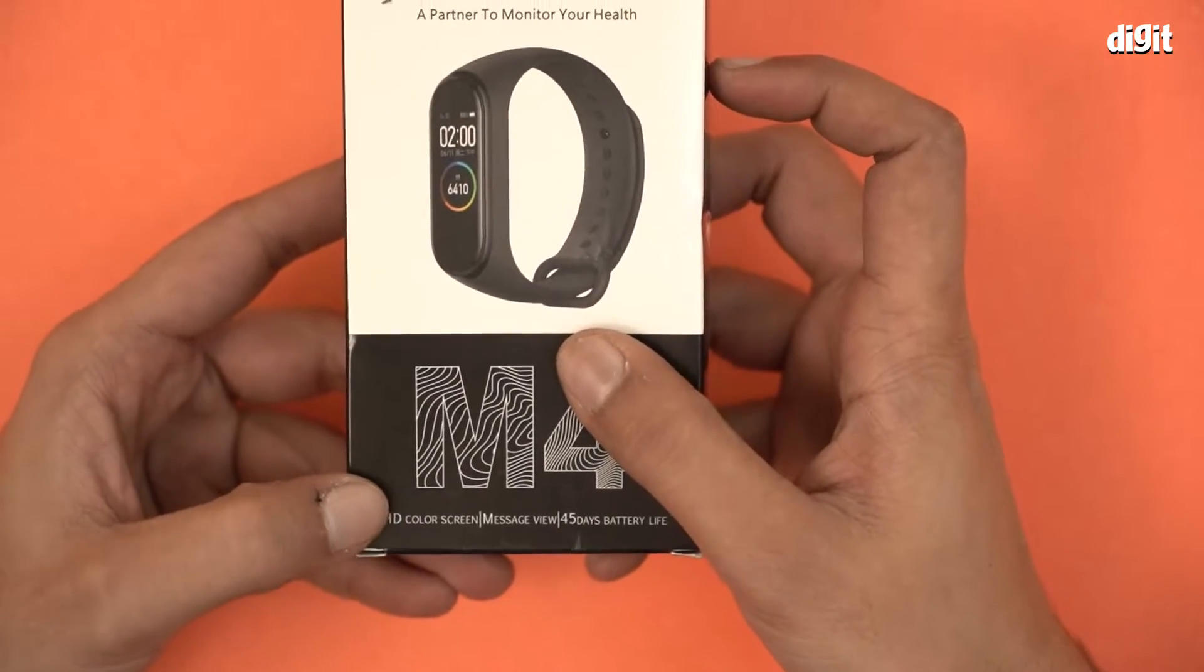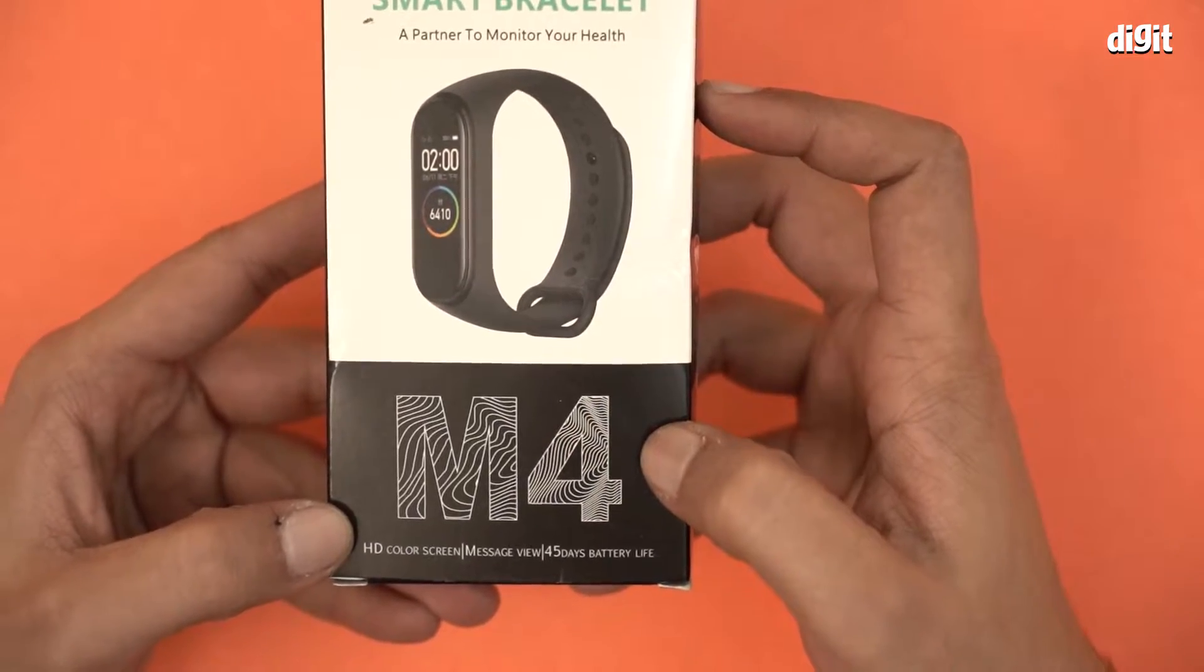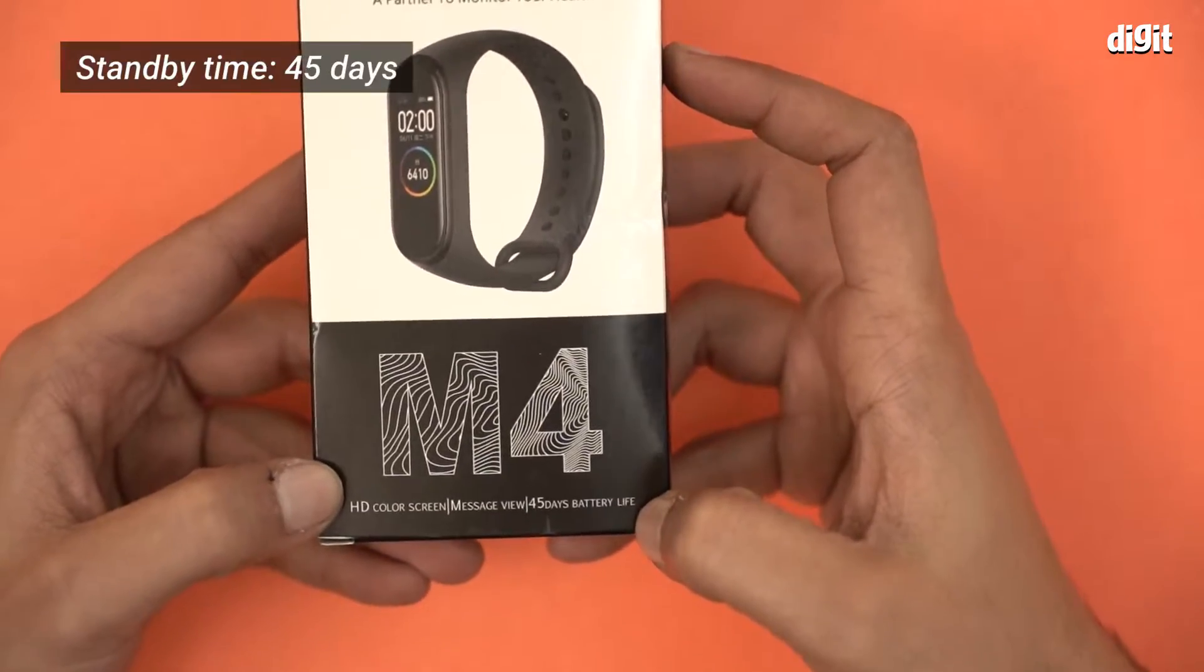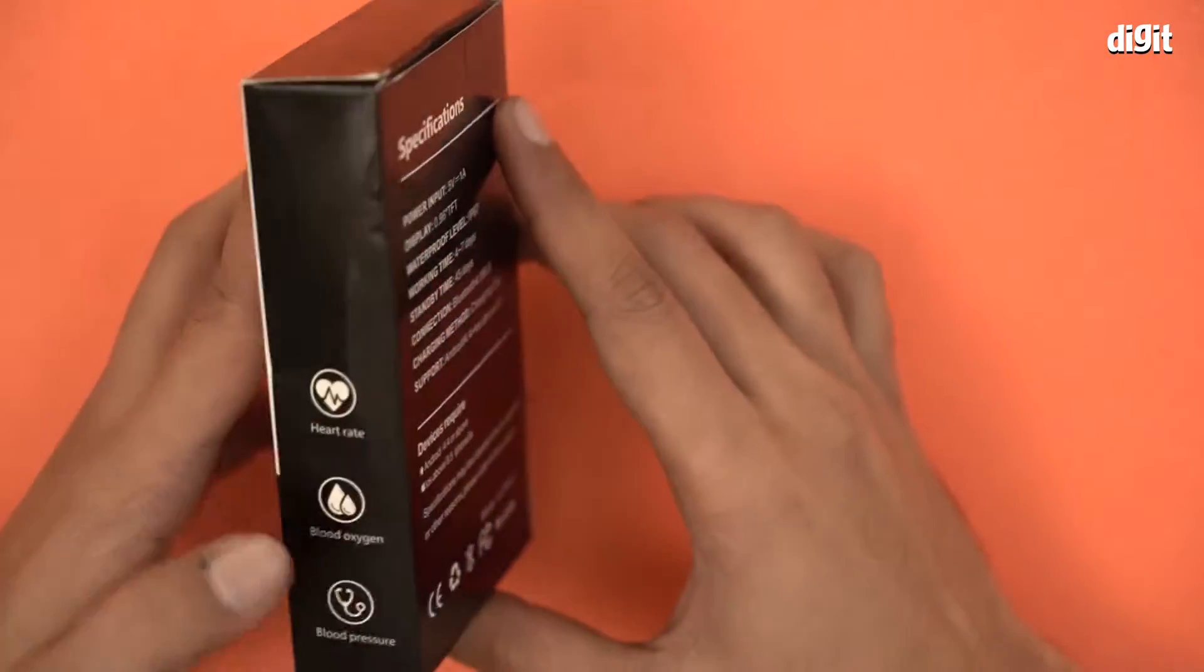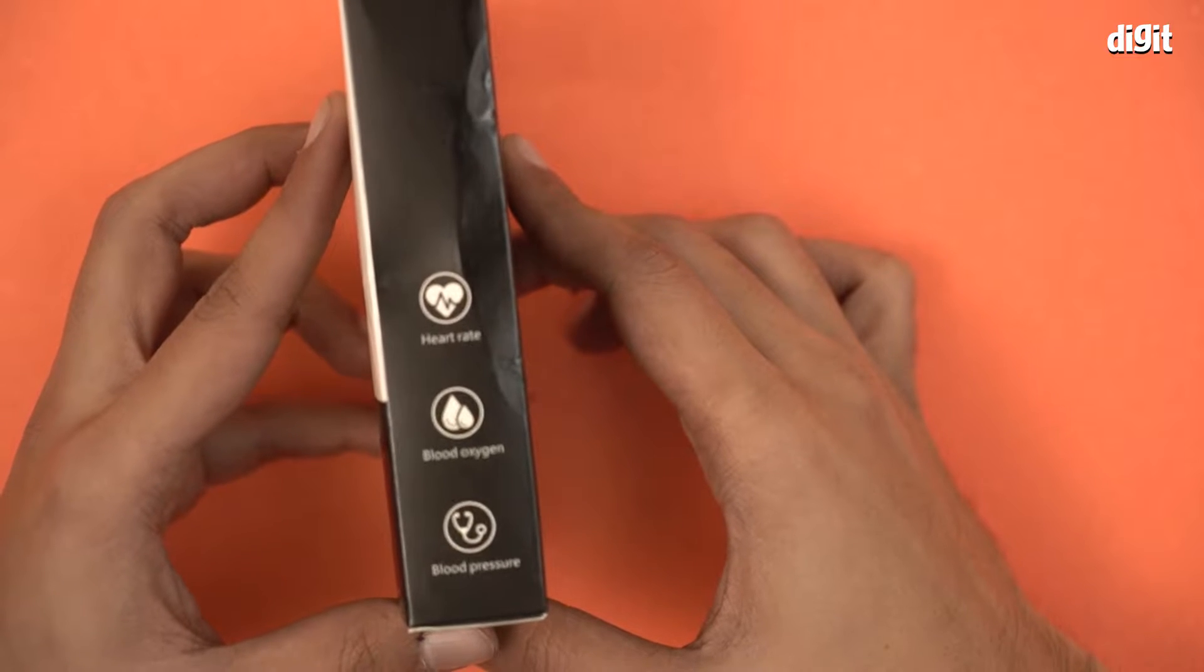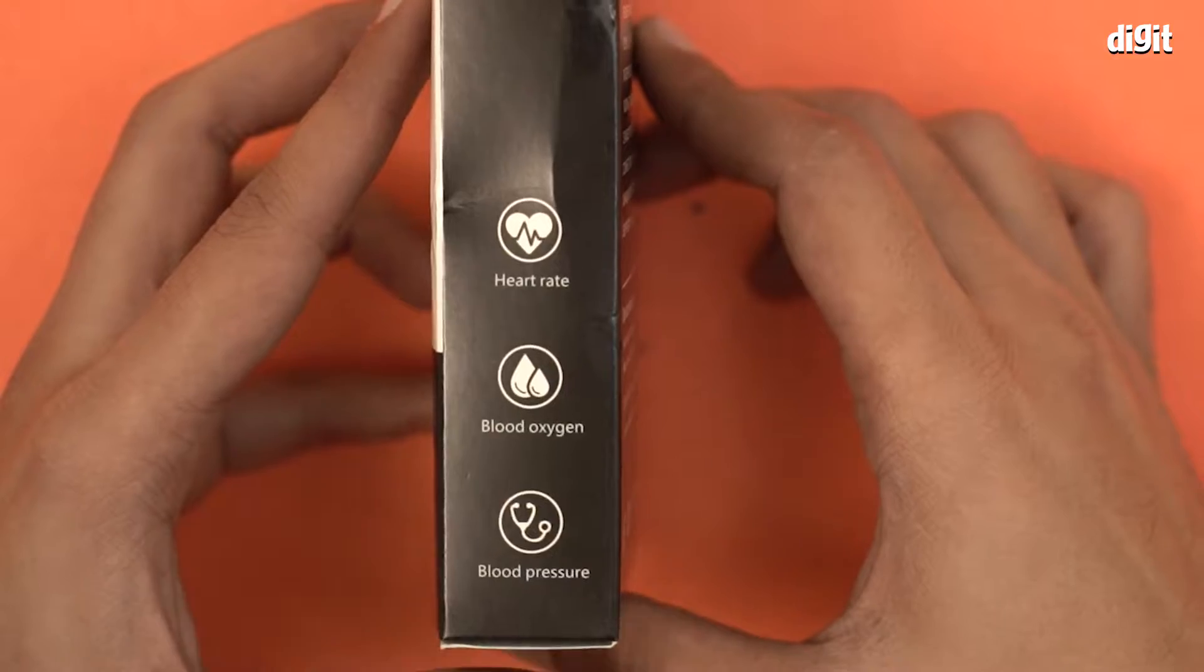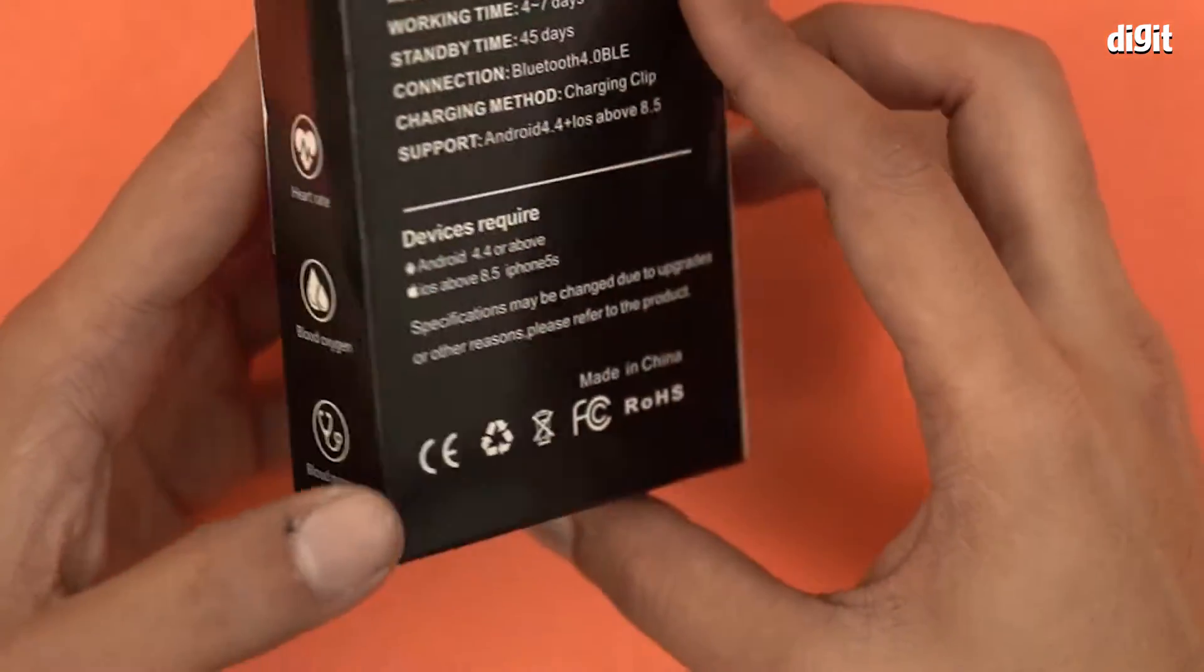It's written here that this smartwatch has an HD color screen, message viewing, and 45 days of battery life, which is quite substantial. Let's see what other information we have. This should be a heart monitor, a blood oxygen level reader, and it also measures your blood pressure.